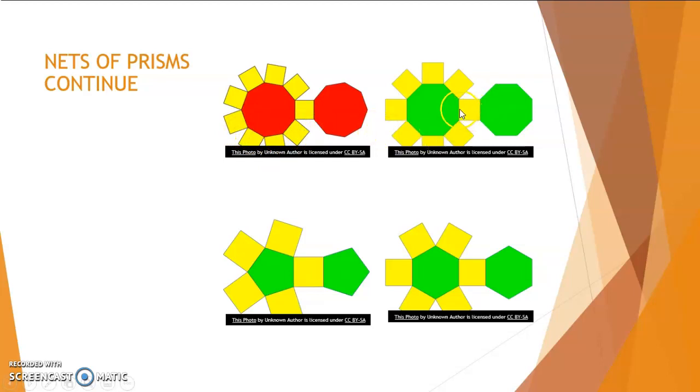If we look at the next one, let's count the sides. It has eight sides. So it's an octagon and it has square faces. So it's an octagonal prism.